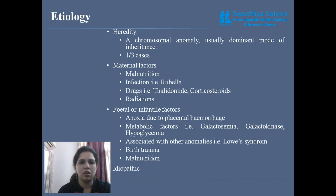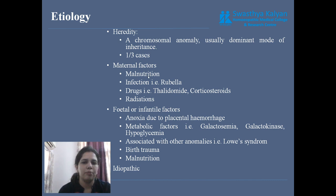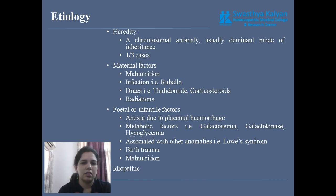Firstly we discuss about etiology. Some factors disturb the normal lens. The first etiological factor is heredity — it is a chromosomal abnormality, usually dominant mode. Some factors like maternal factor and fetal factor are also relevant. Maternal factors include malnutrition, protein energy malnutrition, iron deficiency anemia, infections like rubella and rubella syndrome where the eye, heart and ear come mildly affected, drugs like corticosteroids and thalidomide, and radiation.